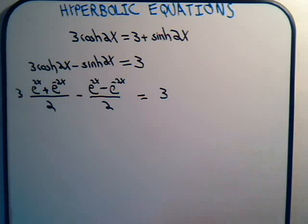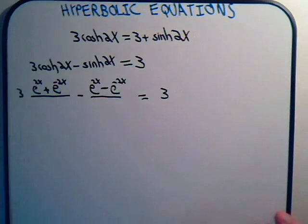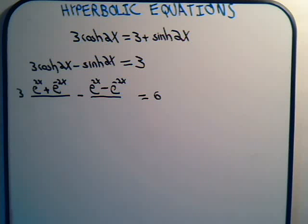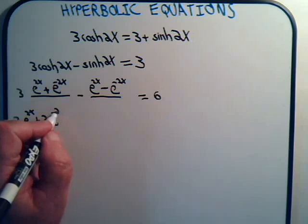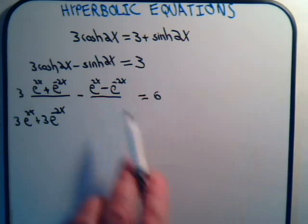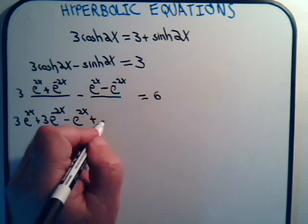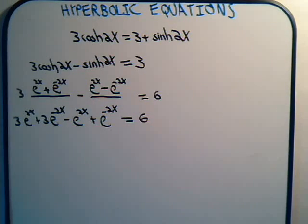Let's multiply both sides of the equation by 2 to clear the denominators, giving us 6 on the right. So we have 3 times e^(2x) plus 3e^(-2x), minus e^(2x) plus e^(-2x), equals 6.